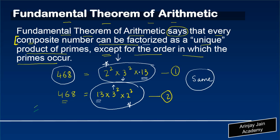except for the order in which the prime occurs. What does it mean? Here, you had starting 13. Here, you had 13 towards the end. 3 squared incidentally happens to be in the middle in both cases. 2 squared in the beginning, 2 squared in the end. So the order might differ.